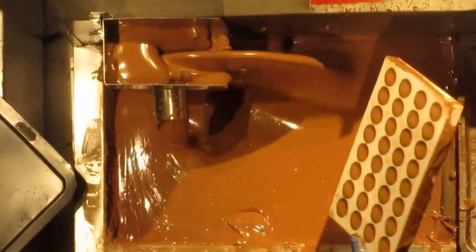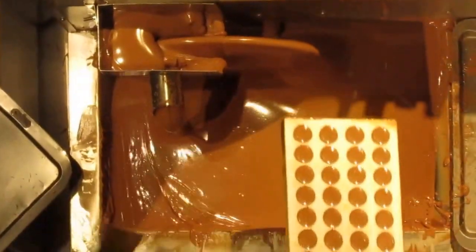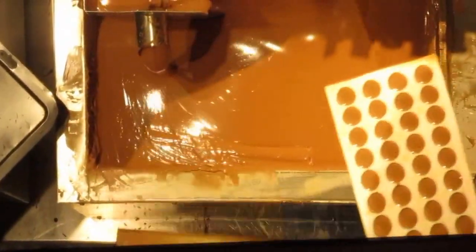So what we need to do now is just scrape off these sides, and once we've done that we need to tap out any air bubbles that might be in our chocolate.